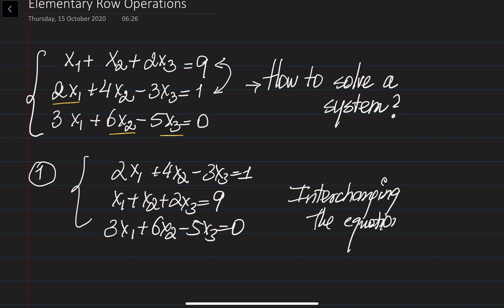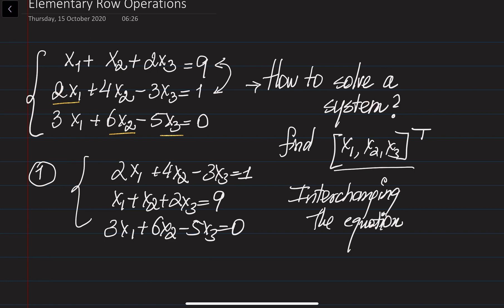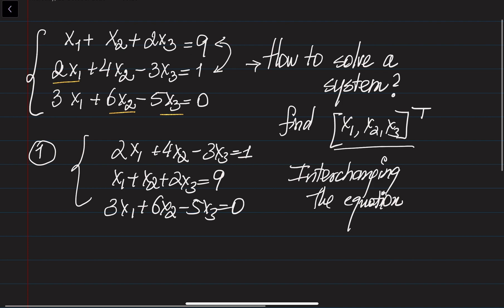This operation is valid because it doesn't change the solution of the system. We are interested in finding values for x1, x2, and x3 that satisfy all of these equations. If you just interchange the equations, these values are still going to be the same — we are still looking for all the same values for x1, x2, and x3.